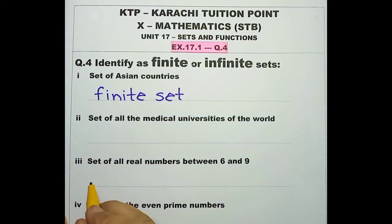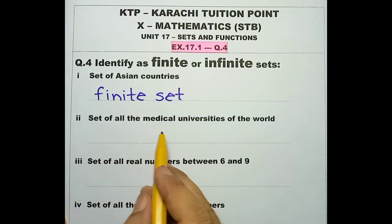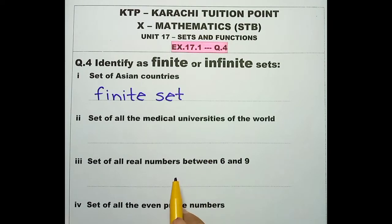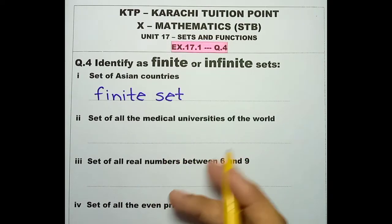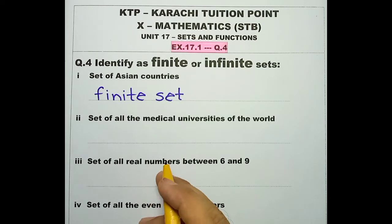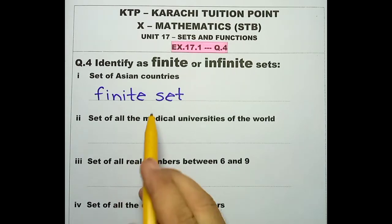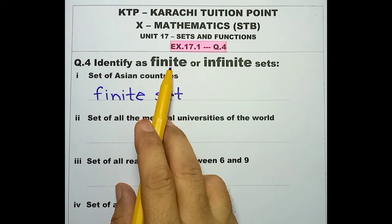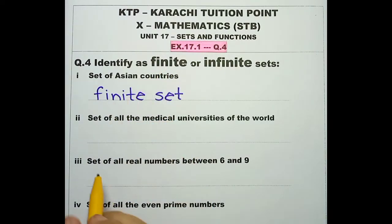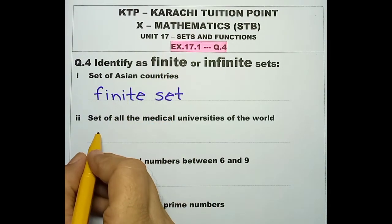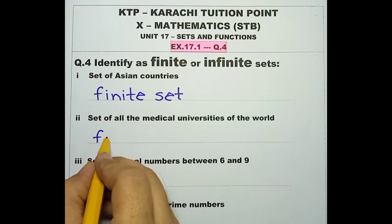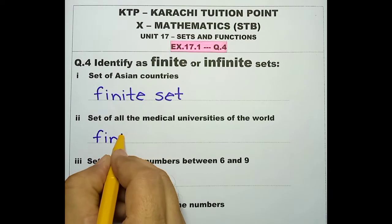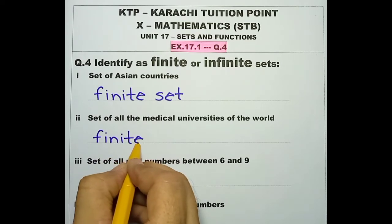Number 2: set of all the medical universities of the world. Dear friends, medical universities in the world can be counted, they may be listed. Finite means countable and limited. So this is also a finite set.